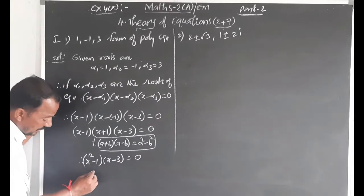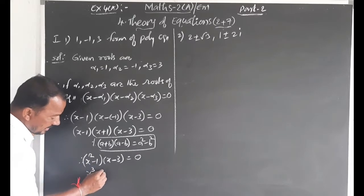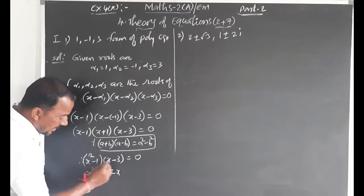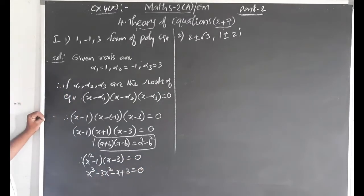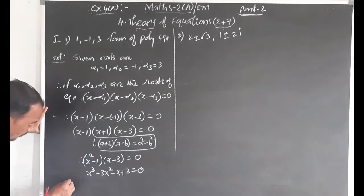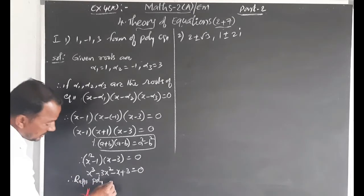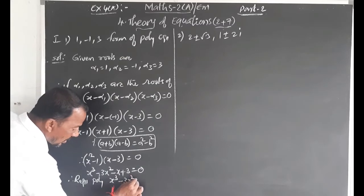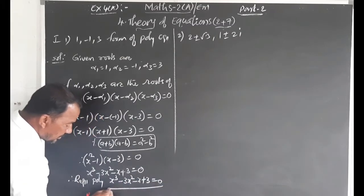Multiply this out: x² · x = x³, x² · (-3) = -3x², (-1) · x = -x, (-1) · (-3) = +3. Therefore, the required polynomial is x³ - 3x² - x + 3 = 0.